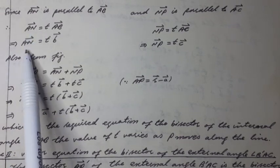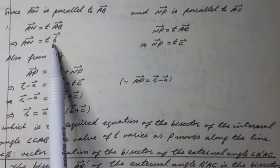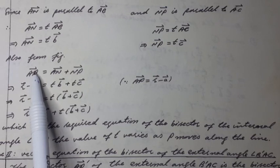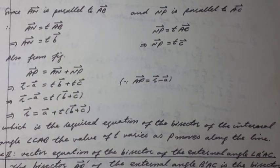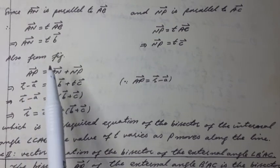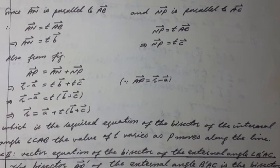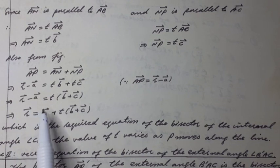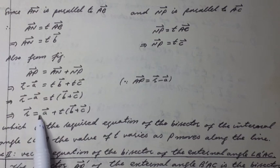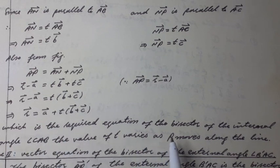Therefore AN vector equals T times B-hat vector and NP vector equals T times C-hat vector. Also from figure, AP vector equals AN vector plus NP vector. It can be written as R vector minus A vector equals T times B-hat vector plus T times C-hat vector, or R vector equals A vector plus T times (B-hat vector plus C-hat vector), which is the required equation of the bisector of the internal angle CAB.